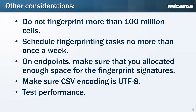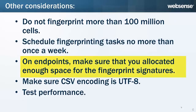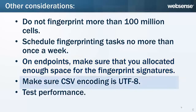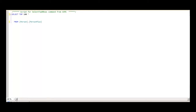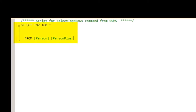In addition to these tips, the following suggestions can have a huge impact on performance and accuracy. Do not fingerprint more than 100 million cells. Schedule fingerprinting tasks once a week and not every day, or use incremental fingerprinting when applicable. If you are protecting endpoints, make sure that you allocated enough space for the fingerprint signatures. New fingerprints will not reach your endpoints if you have not. When fingerprinting a CSV file, make sure the file's encoding is UTF-8. Slow databases can cause fingerprinting to take a very long time, and the Management Console might time out. Run the following SQL query to see if this will be an issue: SELECT TOP 100 * FROM TableName. If it takes more than one minute to return, avoid fingerprinting this database, or make sure the database is responsive.